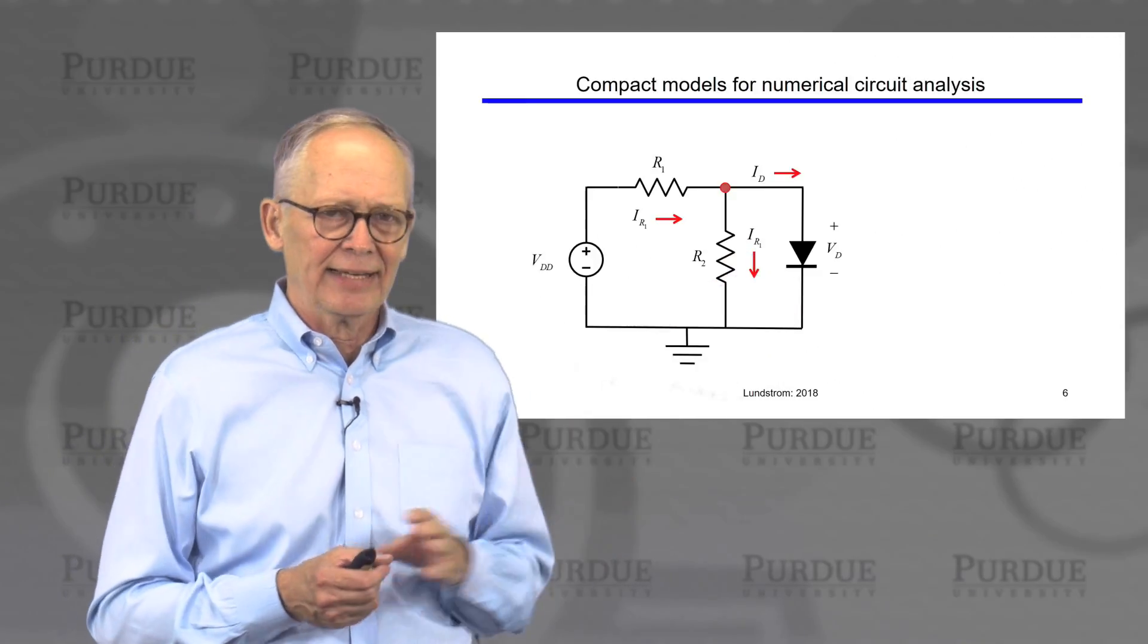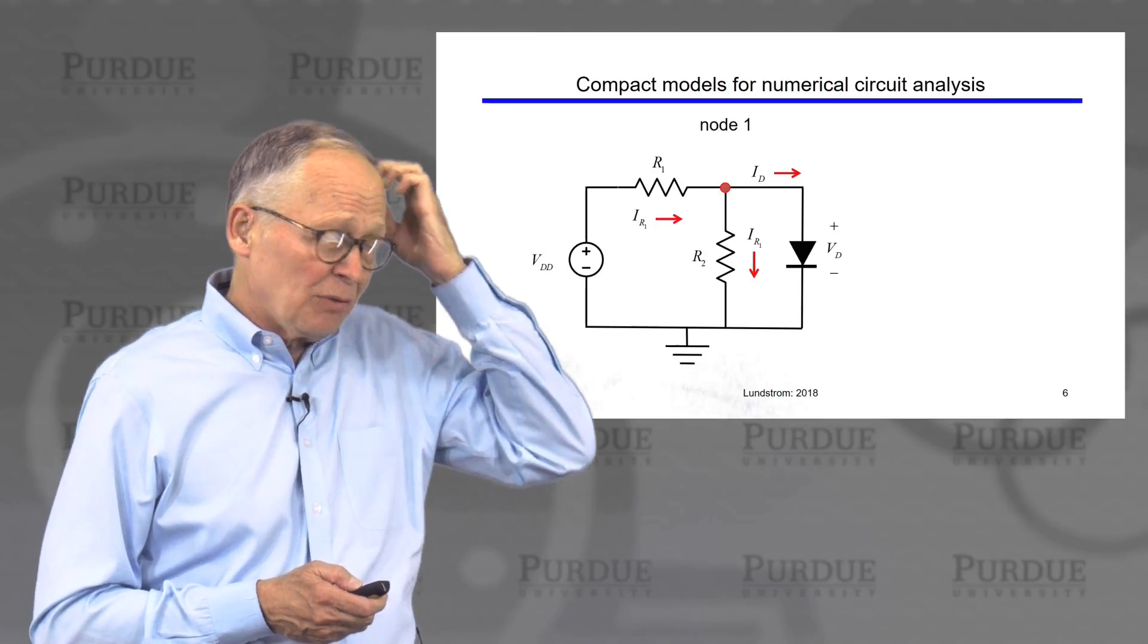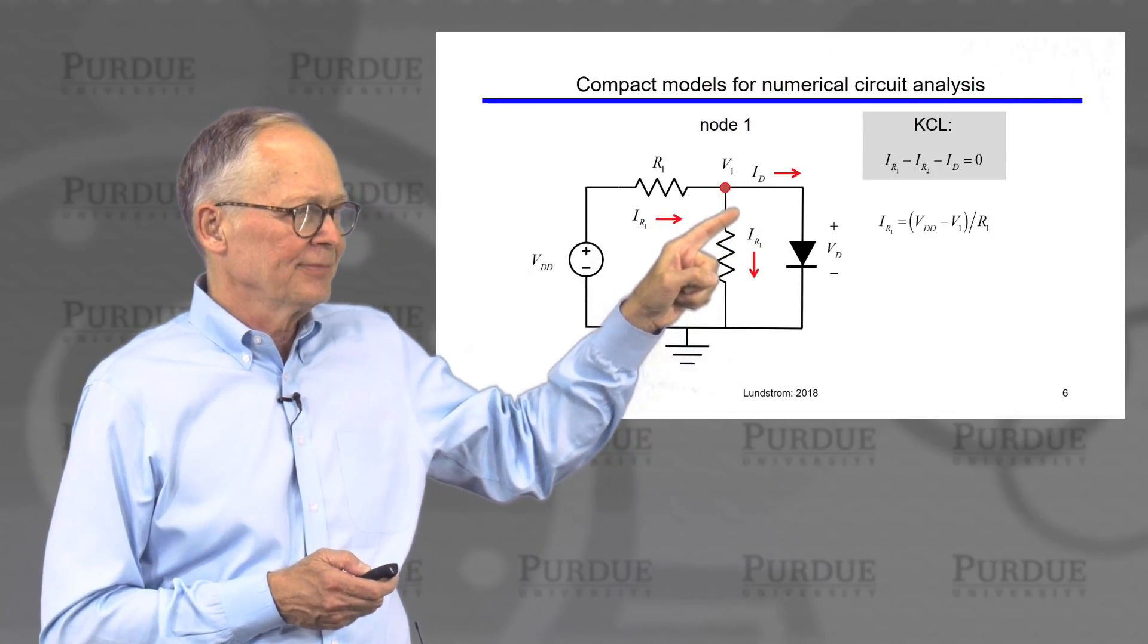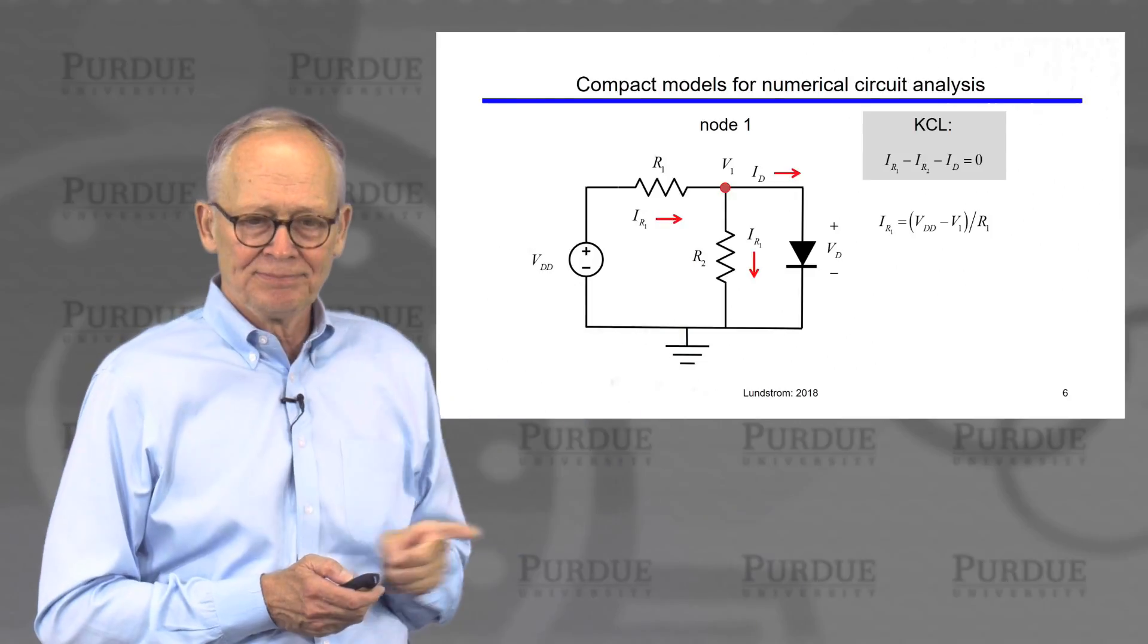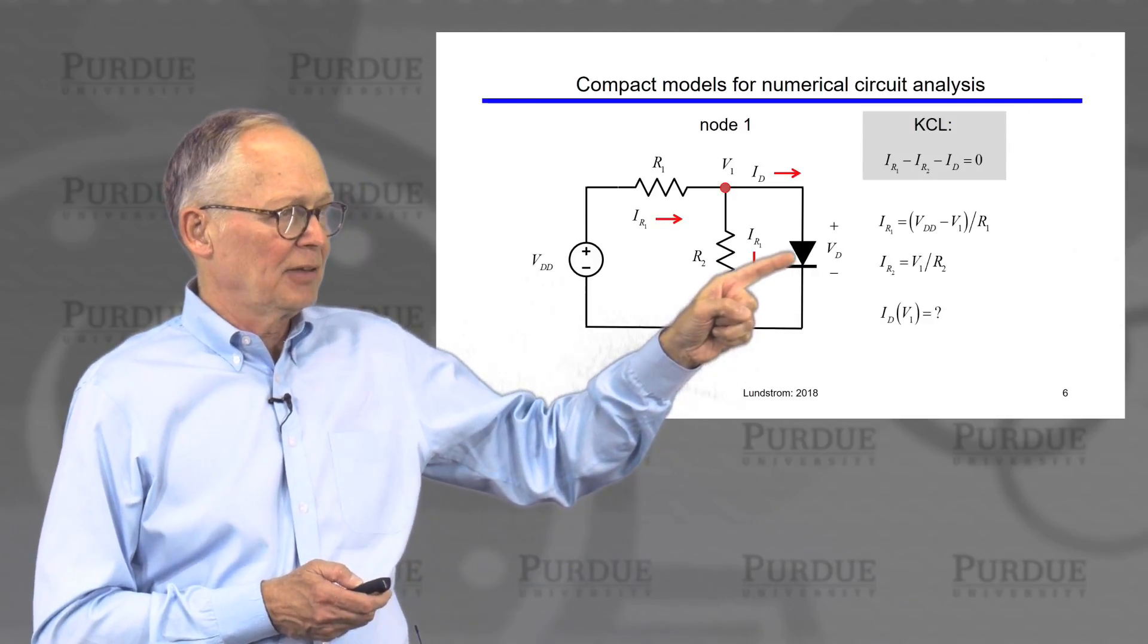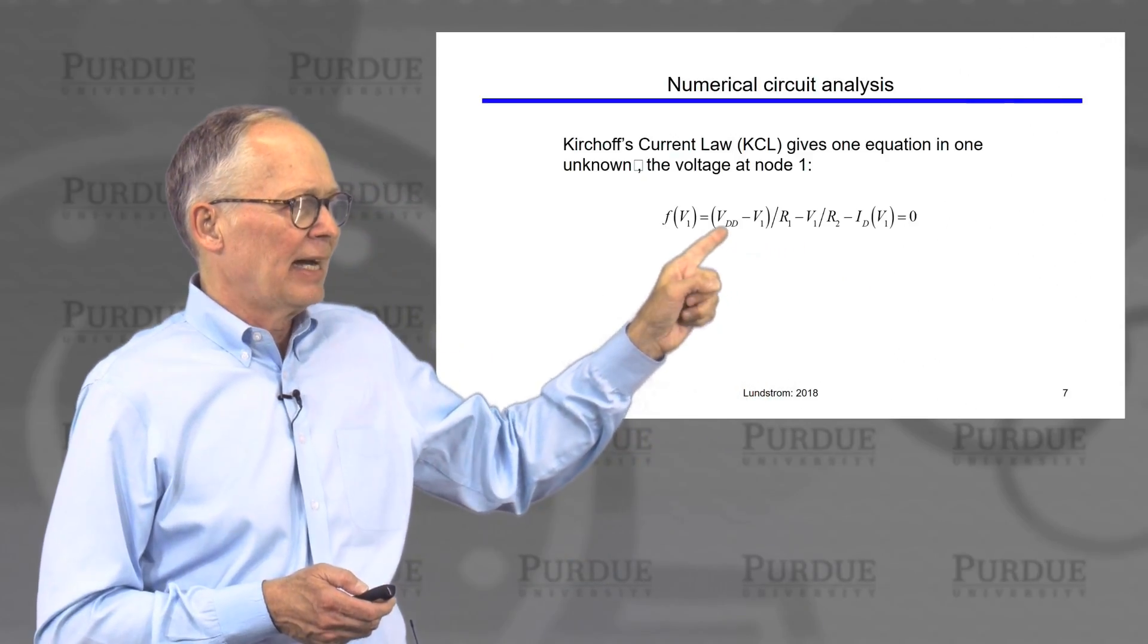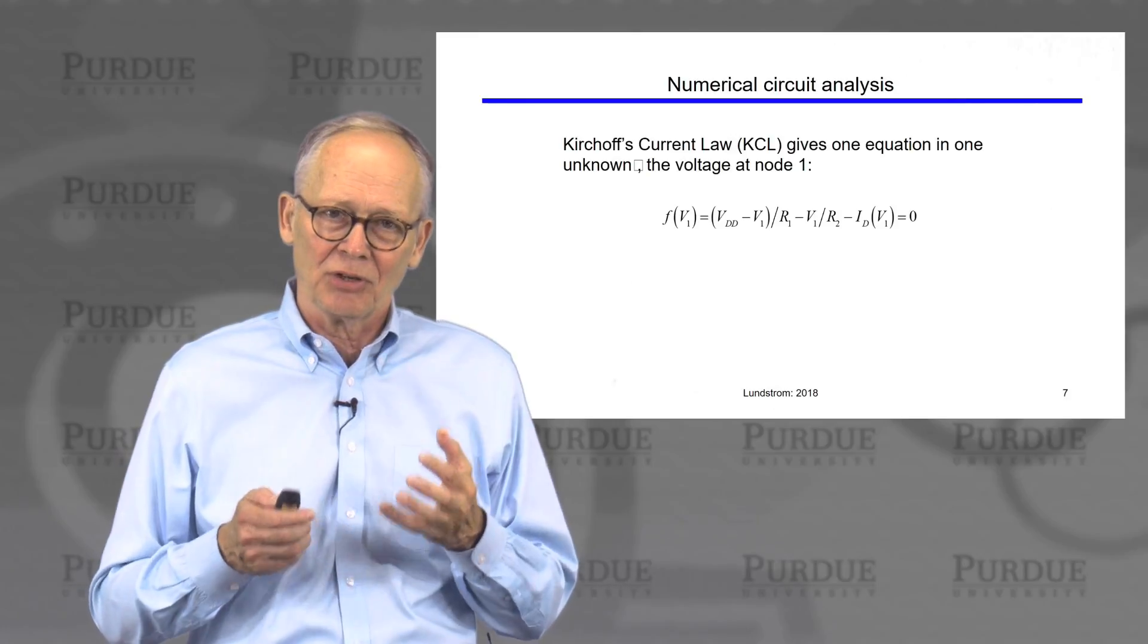Let's begin with a very simple circuit to analyze: a power supply, a couple of resistors, and a diode, a non-linear electronic device. There's only really one node to worry about in analyzing this. I can add up all the currents coming into that node and apply Kirchhoff's current law. If the voltage at that node is V1, then the current through resistor R1 is the power supply voltage minus V1 divided by R1. The current through R2 is V1 divided by R2. Then I have the current through the diode, which is a function of the voltage across the diode. I add those three together and they should sum to zero.